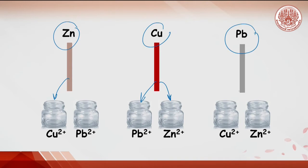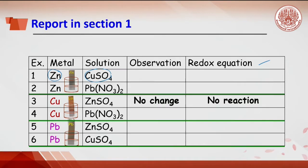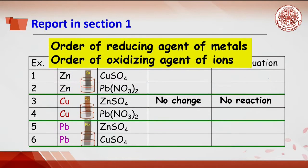Repeat the reaction by placing the copper strip into lead ion and zinc ion, and the lead strip into copper ion and zinc ion. If nothing happened, write 'no change' in the observation column and 'no reaction' in the redox equation. If placing zinc into copper solution, the observed result will be copper deposition. The redox reaction can be written as: zinc strip reacts with copper ions to get zinc ion and copper solid. From the six experiments, the order of reducing agent and oxidizing agent of the metals are reported.